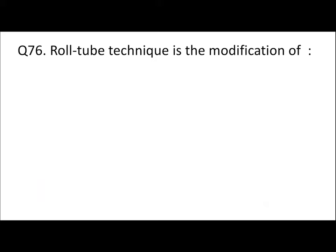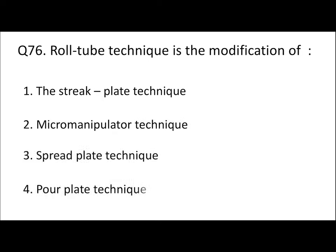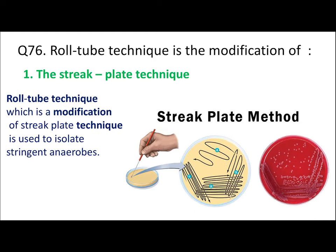Question 76: Roll tube technique is the modification of which technique — streak plate technique, micro manipulator technique, spread plate technique, or pour plate technique? These techniques belong to microbiology and are used for cultivation and growth of bacteria. The roll tube technique is the modification of the streak plate technique, and it is used for isolation of anaerobes.